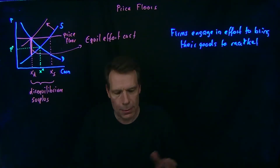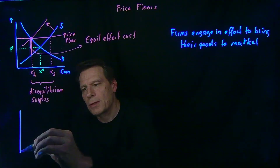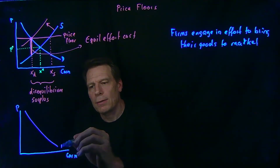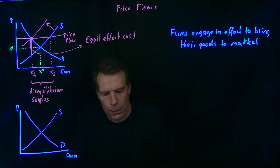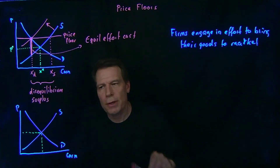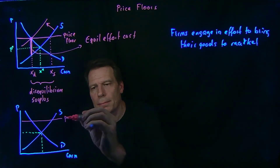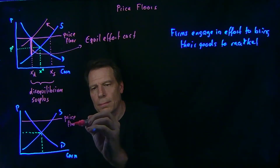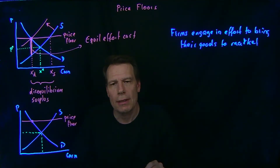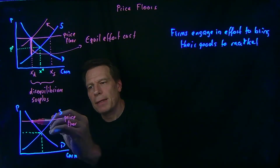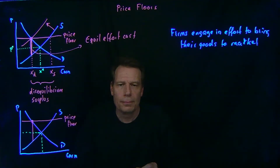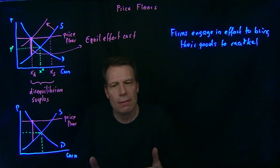We have a fairly cluttered picture, so let's unclutter it. We have corn on the horizontal axis, the price of corn on the vertical, and the original demand and supply curves with the original equilibrium price and quantity. The price floor is imposed above the equilibrium price, and we know we're going to end up at an equilibrium once the supply curve has shifted due to those additional effort costs. Instead of shifting curves, we can just draw in that equilibrium effort cost.